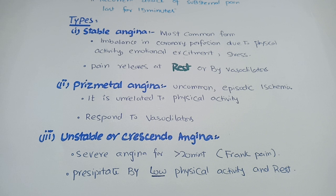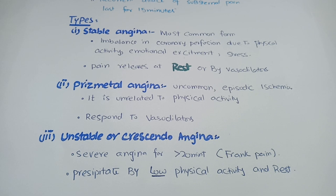Unstable angina, also called Crescendo angina, is characterized by severe pain lasting more than 20 minutes, also called frank pain. This angina is precipitated by low physical activity and rest, and it does not respond to vasodilators.